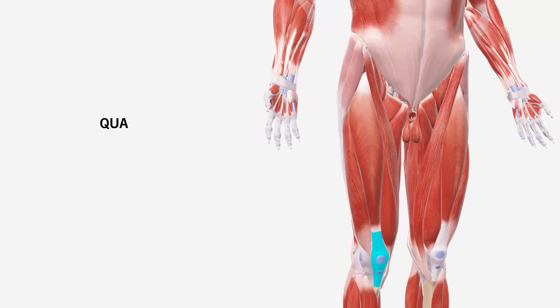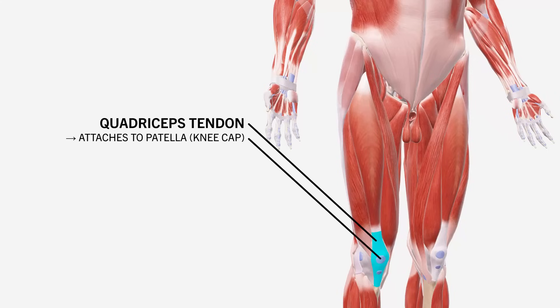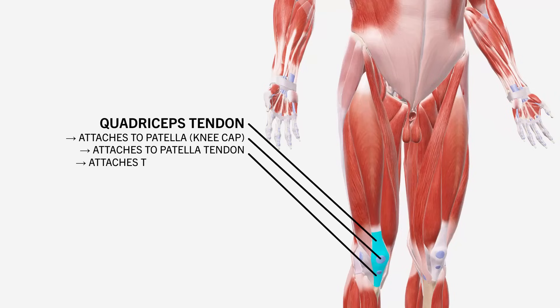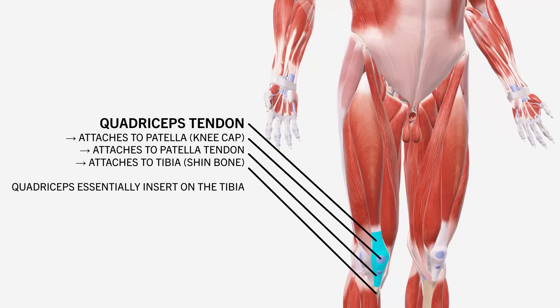It is also worth mentioning something about the quadriceps tendon that all the quad muscles attach to. This tendon attaches to the patella or kneecap, then extends past the kneecap where the name changes to the patellar tendon. The patellar tendon then attaches onto the tibia or shin bone. So essentially we can think of the quadriceps muscles as being extended to attach onto the tibia, which is how it contributes to moving the knee joint.